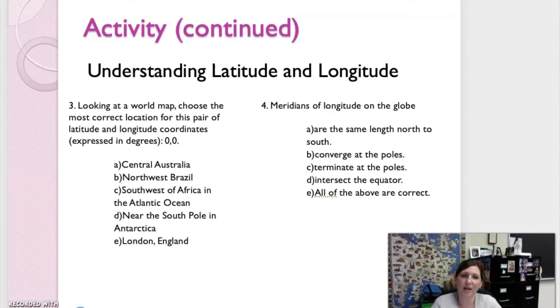How about a few more questions? Number three, looking at a world map, choose the most correct location for this pair of latitude and longitude coordinates expressed in degrees. If you have a map or an atlas, go ahead and get that out, pause your video, and then proceed. Number three, C. Southwest of Africa in the Atlantic Ocean would be closest to the express location of 0, 0. Number four, meridians of longitude on the globe. Pause now. The answer is E. All of the above are correct. Meridians of longitude on the globe are the same length north to south. They converge at the poles, they terminate at the poles, and they do intersect the equator.